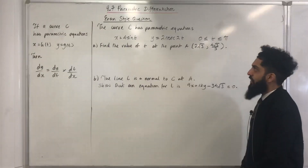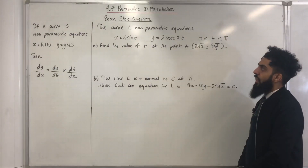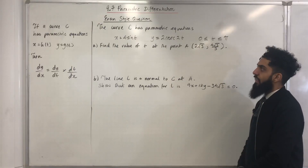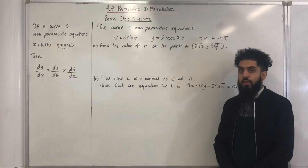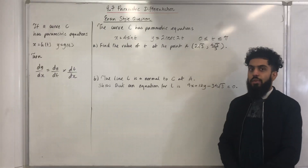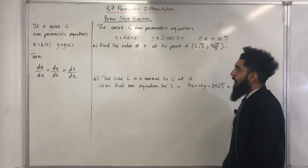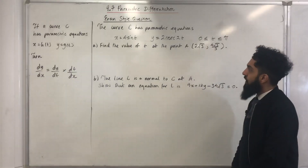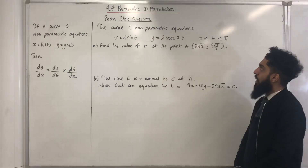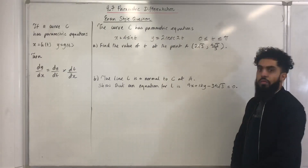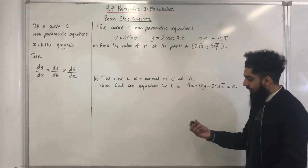Here is an exam style question. The curve C has parametric equations x equal 4 sine t, y equal 2 cosec 2t, where t is greater than or equal to 0 but less than or equal to pi. Part A: find the value of t at the point A with coordinates 2 square root 3, 4 square root 3 over 3.